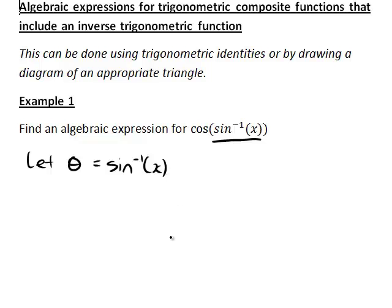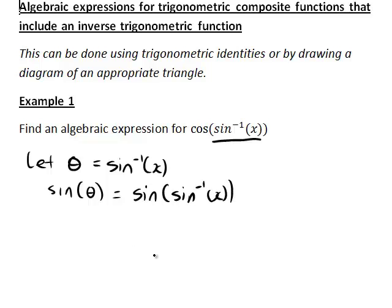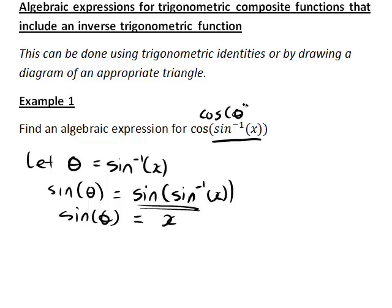Now, if inverse sine of x is equal to theta, and we take sine of both sides, then sine theta equals sine of inverse sine of x. We can rewrite that as sine theta simply equals x, since these are inverses of each other. And what we want is cos of inverse sine x — that is, cos of theta, with the way we've defined theta here.